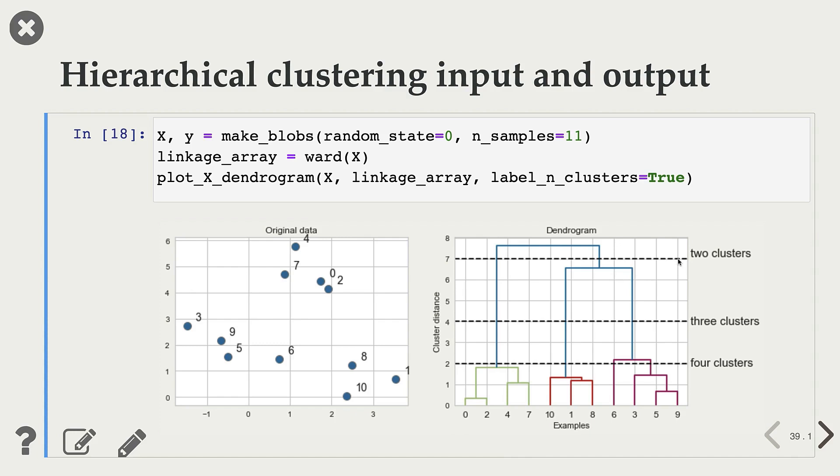On the other hand, if we cut it here at this threshold of 7, we will only have two clusters, this green cluster and this big cluster. So this branch is long, and what it means is that going from three clusters to two clusters means that we will be merging very far apart points because this branch is long.